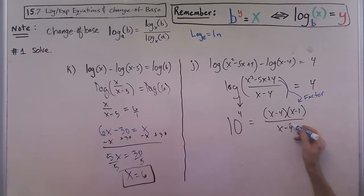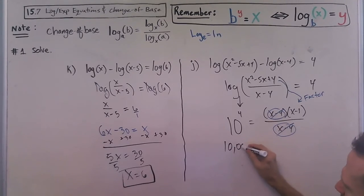Here I have a matching binomial, so that'll cancel out. 10 to the 4th is 10,000. So I have 10,000 equals x minus 1. And then I'll add 1 to both sides.